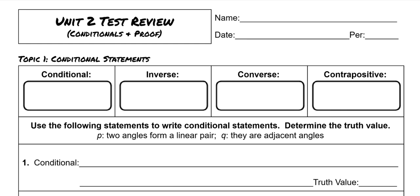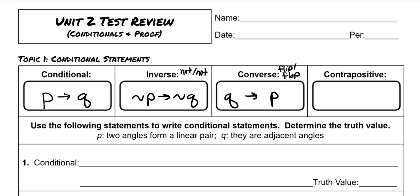Hey guys, I'm going to go over your test review. If for any reason you missed school or if you're a virtual student, this is how you can get help on your review. In these top boxes you're going to write what the symbol notation is for each of these. For a conditional statement it's P then Q. For an inverse, that's not-not, which is not P then not Q. Converse is flip-flop, which means Q then P. And contrapositive is flip-flop and not-not, in other words not Q then not P.